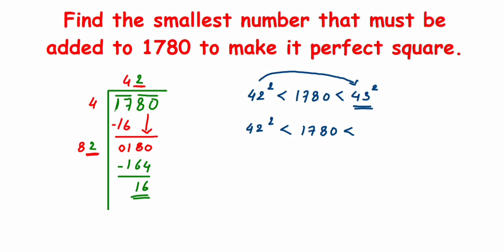I'm not going to open 42. I'll just write down 42 square is less than 1780, which is again less than 43 square, which is nothing but 1849. So 1849 is a perfect square. We have to find out how much we should add to 1780 to get 1849.